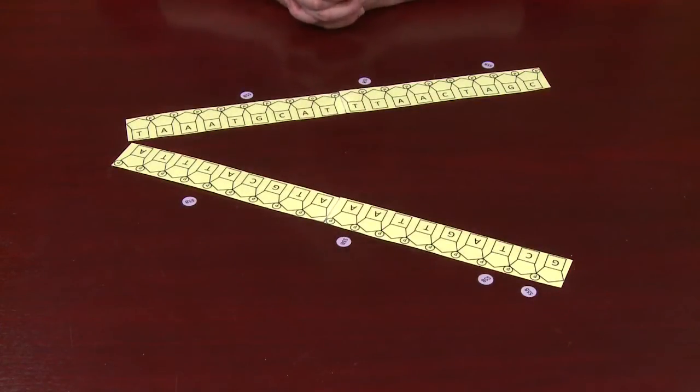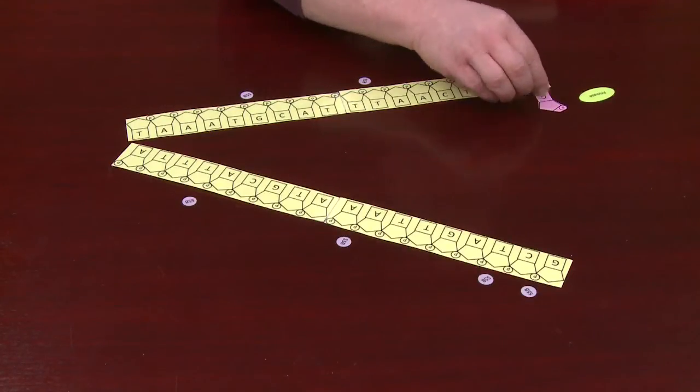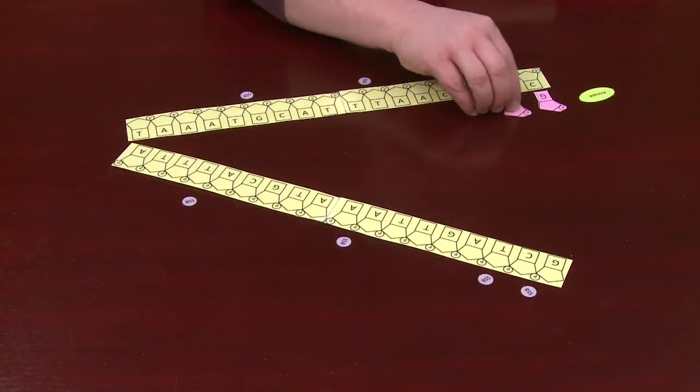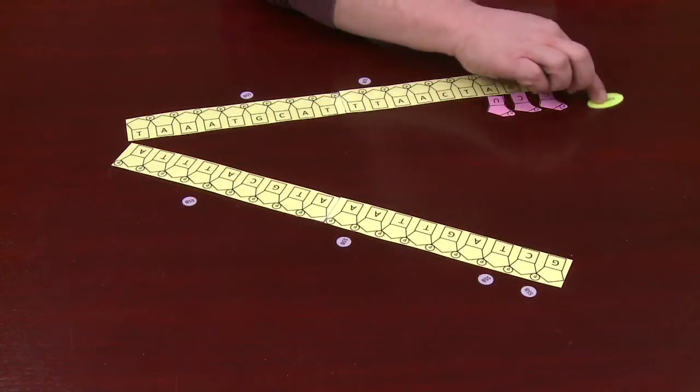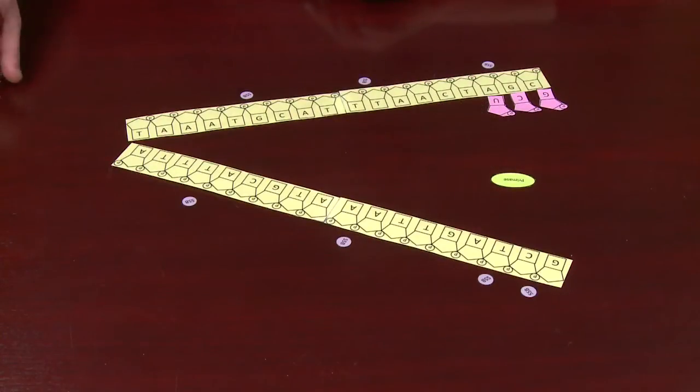Now we're ready to start making new DNA, but we don't start with new DNA. We start with an enzyme called primase that's actually going to synthesize RNA. Primase is going to create short pieces of RNA called primers, and we'll do that on both strands.